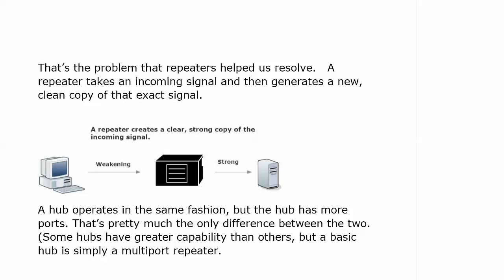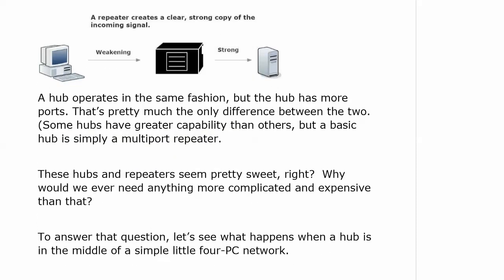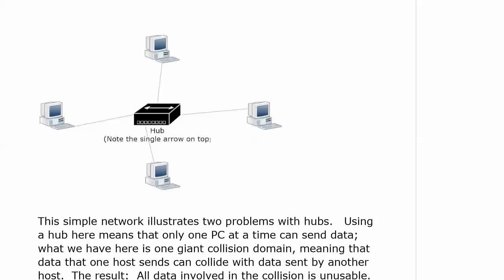Now, some of you may be saying you've worked with smart hubs that can do a little bit more than that — and that is true. But a basic hub is simply a multi-port repeater. So at the time, it felt like we'd never need anything better. Why did we need switches anyway? Why did we ever need anything better than a repeater or a hub? To answer that question, let's see what happens when a hub is in the middle of a simple 4-PC network. Do notice there is a single double arrow on top of this hub — I would be ready to recognize that symbol for a hub on the exam.